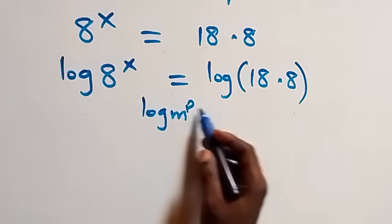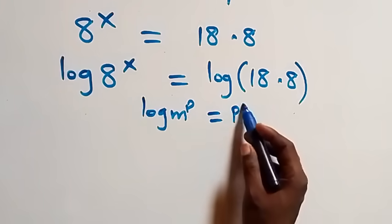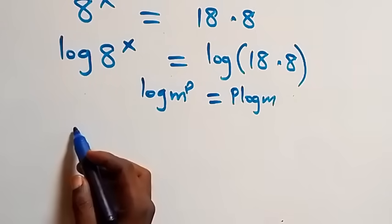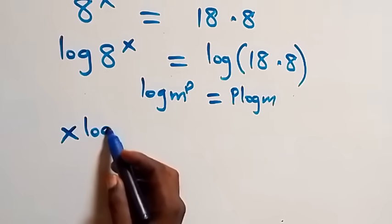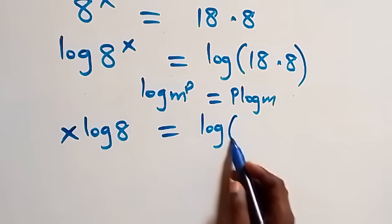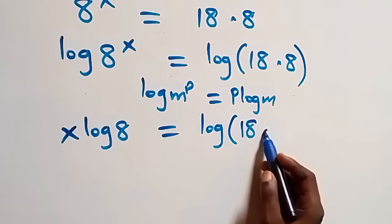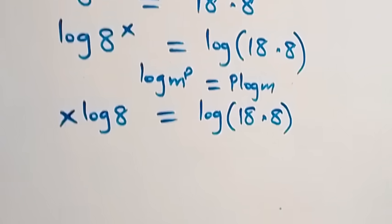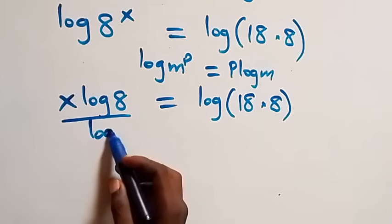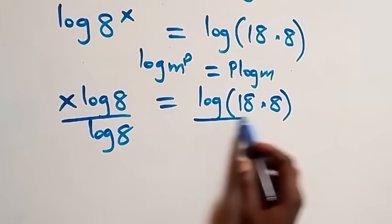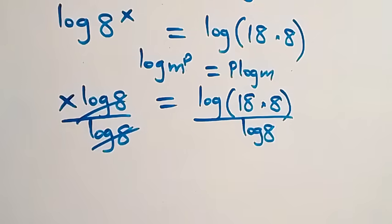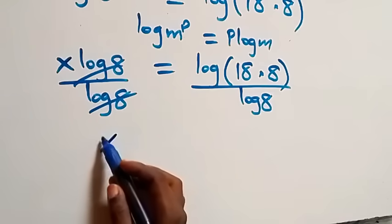Next step we apply the power law of logarithm. When we have log m raised to power p, this is the same thing as p log m. So this becomes x log 8 equals log of 18 times 8. The next step: divide both sides by log 8. Divide this side by log 8, also divide this side by log 8, which implies log 8 cancels each other.